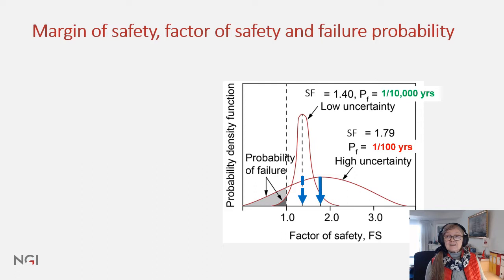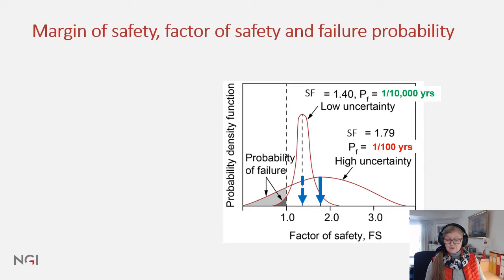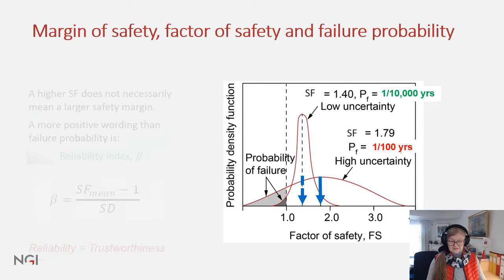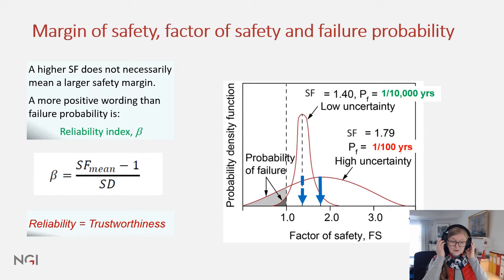The annual failure probability was 1 in 100 years. The design done a few years later, after a large site investigation program had been carried out, had a mean safety factor of 1.4. The requirement was 1.5, but the failure probability was 1 in 10,000 years as shown here. So a higher safety factor does not necessarily mean a larger safety margin.